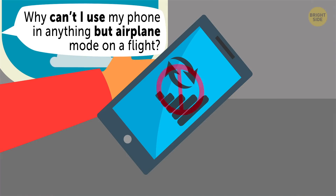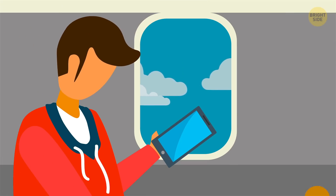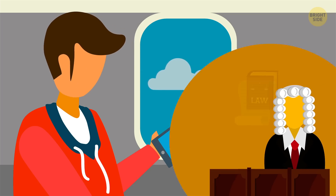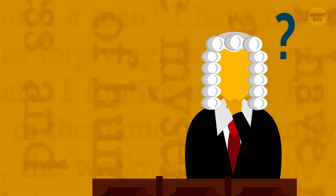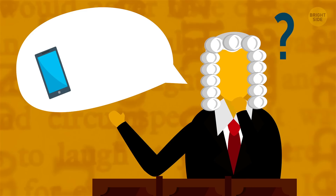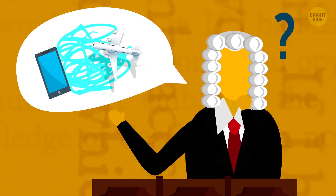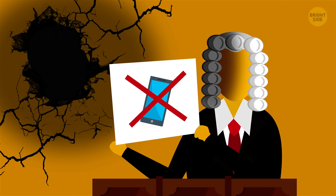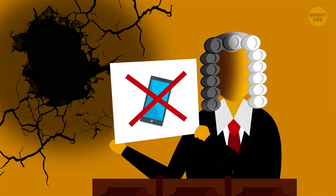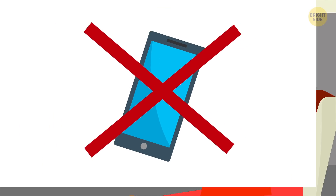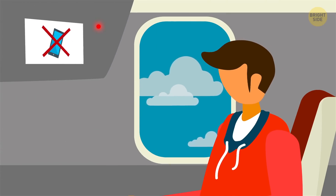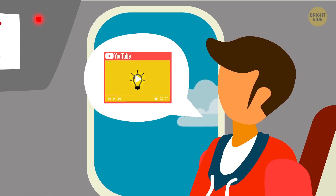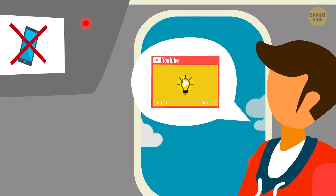Why can't you use your phone in anything other than airplane mode on a flight? Well, for starters, it's the law, at least in the US. Back in 1991, the Federal Communications Commission banned in-flight use of wireless devices to prevent network interference. Since then, there hasn't been much evidence to prove that your phone messes up the airplane's communication and navigation equipment — but then again, there isn't much evidence to prove that it won't. So even as technology has advanced greatly from when these rules were put into effect, the FAA has continued to err on the side of caution.